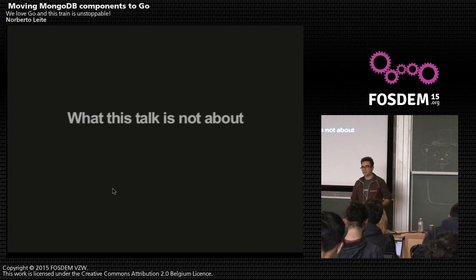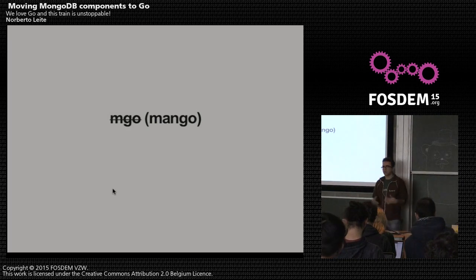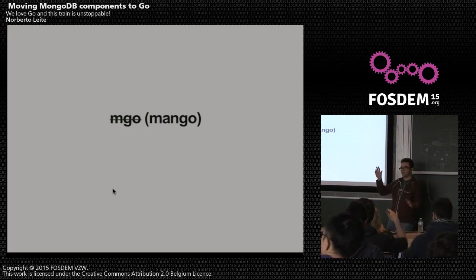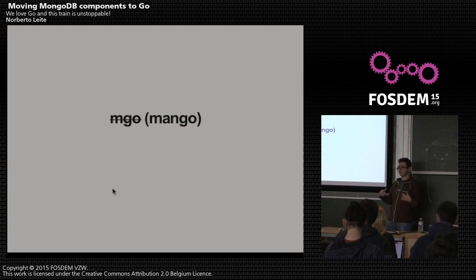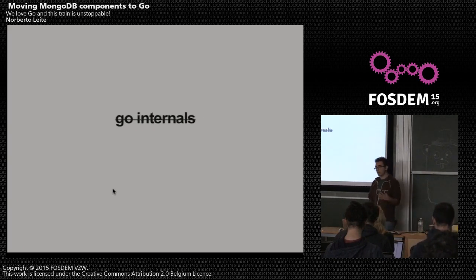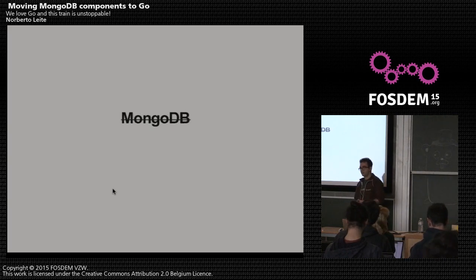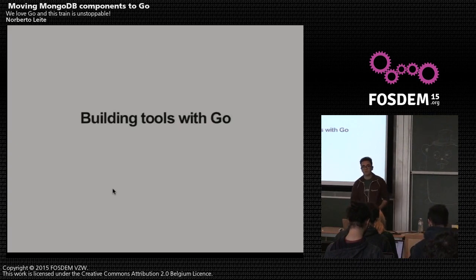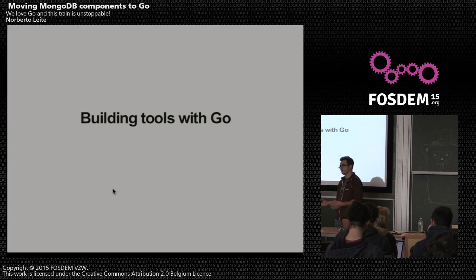Let's start by telling you guys what this talk is not about. Obviously, it's not about mGo - do you guys know mGo here? Is anyone here using MongoDB to start with? I'm not going to talk about the Go internals or mGo, which is the driver. And obviously, I'm not going to talk about MongoDB features or how to set up a cluster or replica set or do a query. I'm also not interested in talking about how to build applications in Go using MongoDB. It's about us as a company - we set up a set of tools that the database requires that are purely in Go.